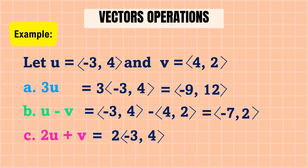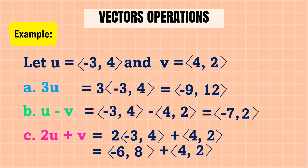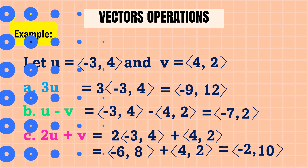Next, we solve 2u + v: 2 × (−3, 4) + (4, 2). First, 2u: 2 × (−3) = −6, 2 × 4 = 8, giving (−6, 8). Then (−6, 8) + (4, 2): −6 + 4 = −2, and 8 + 2 = 10. Therefore, 2u + v = (−2, 10). I hope you understood our lesson for today.